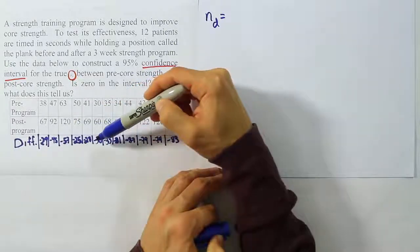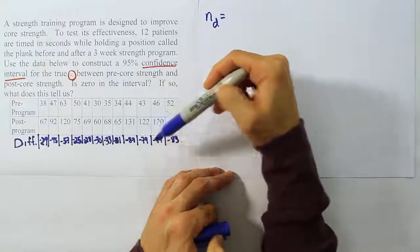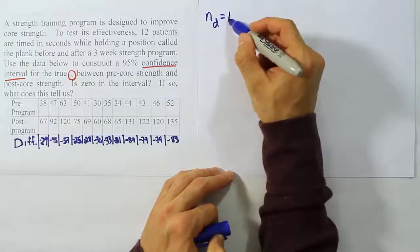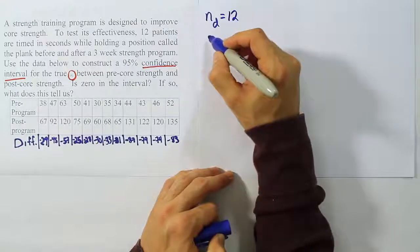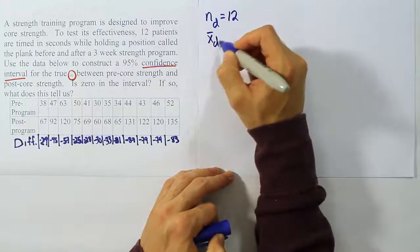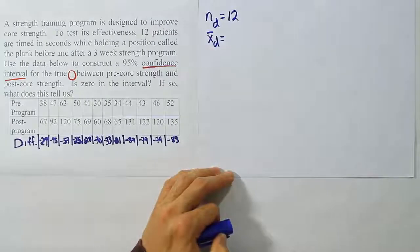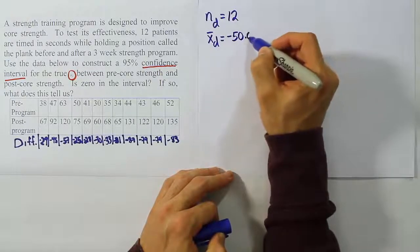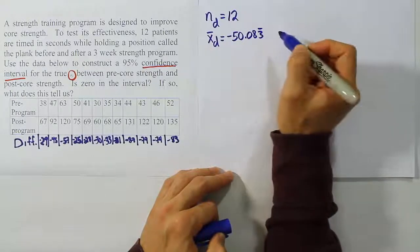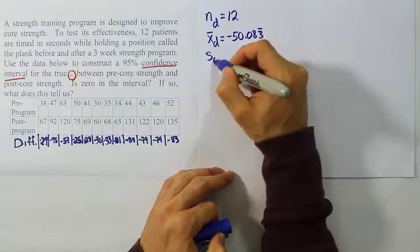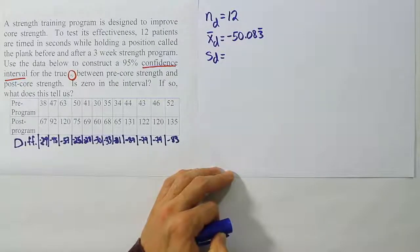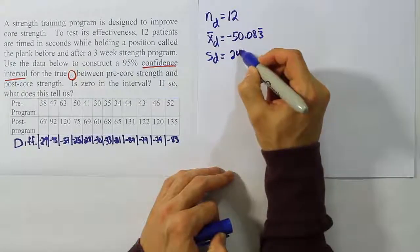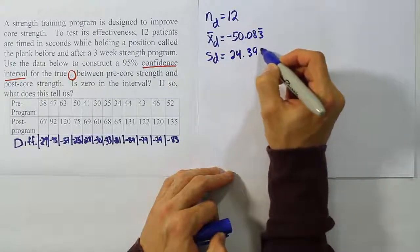There are 12 differences in our list here. Then we're going to have an X bar, or an average for the differences. When I worked that out in my calculator, I came up with the answer minus 50.083 repeating. And then standard deviation for the differences, when I worked that in my calculator, I got the answer 24.3999.